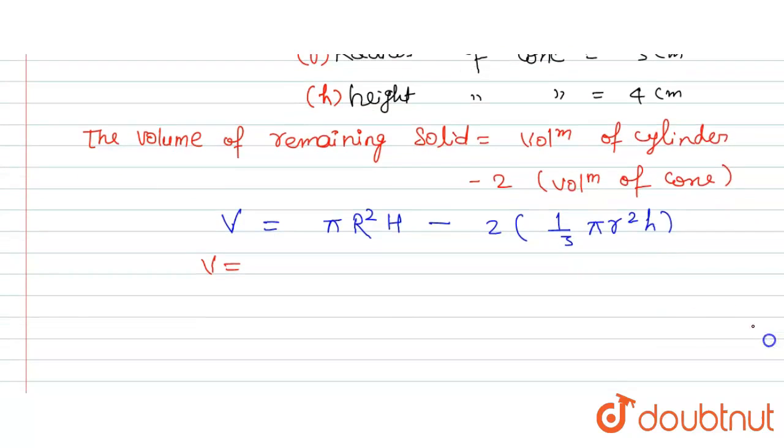So we will put these values. This will be equal to π, we will take it as 22/7, and radius is half of 7, that is 3.5 squared, times height 15, and minus